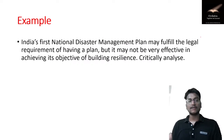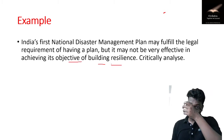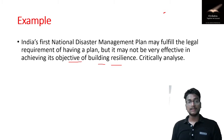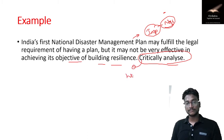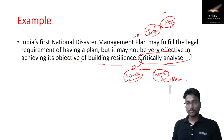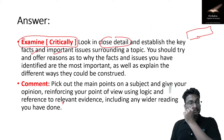For example: 'India's first National Disaster Management Plan may fulfill the legal requirements of having a plan, but it may not be very effective in achieving the objectives of building resilience.' Here you mention what the plan is, its importance, and the need for it. Since it asks you to critically analyze, you analyze whether it will work and why it may not work, providing reasons and substantiating them.